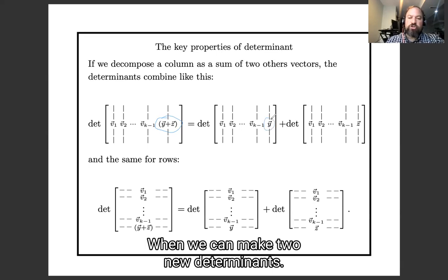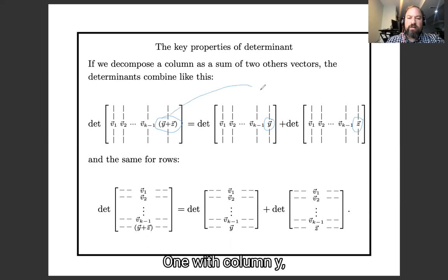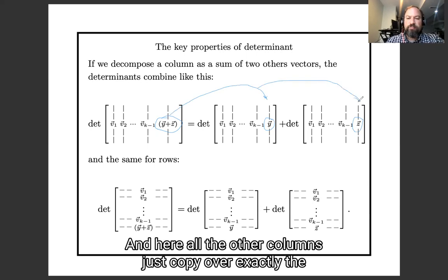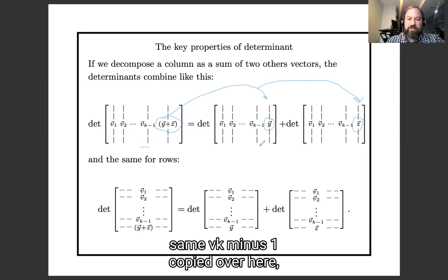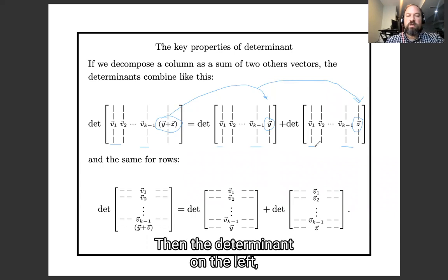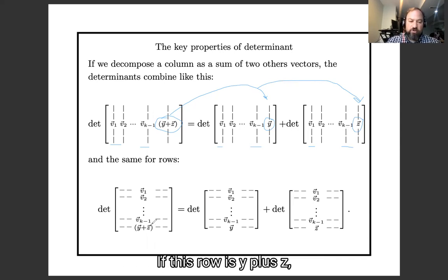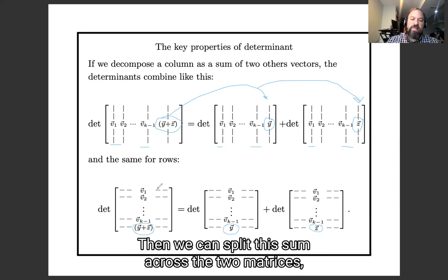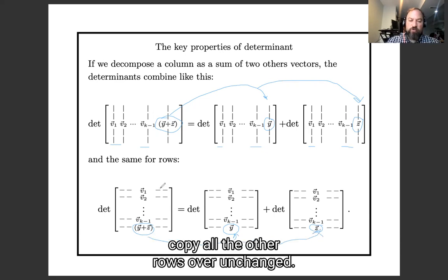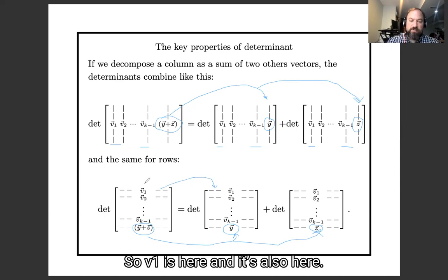One with column y and one with column z, and here all the other columns just copied over exactly the same, vk minus one, copied over here, v one copied over here, and so forth. Then the determinant on the left is the sum of the two determinants on the right. And the same thing with rows. If this row is y plus z, and we decompose it as y plus z, then we can split this sum across the two matrices, copy all the other rows over unchanged. So that v1 is here, and it's also here. And this determinant on the left is the sum of these two determinants on the right.